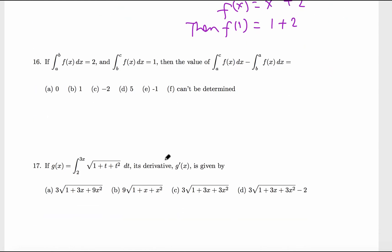Number 16: a to b of this function is 2, b to c of that same function, this definite integral is 1. So pretty much we have a curve. I don't know what f is, but it's something like this. From a to b this area is 2, and from b to c this area is 1.